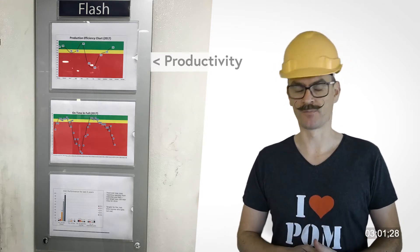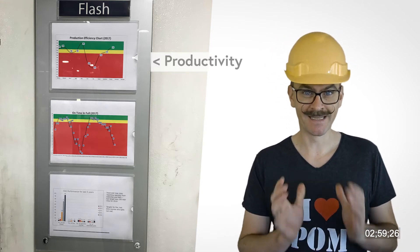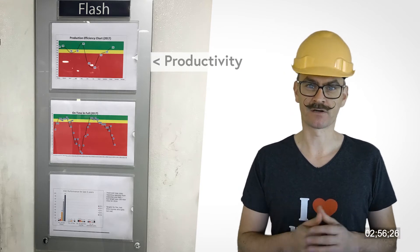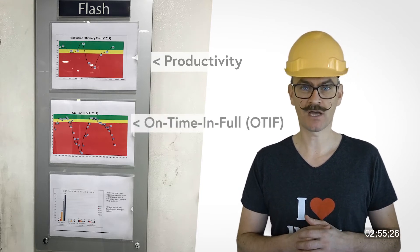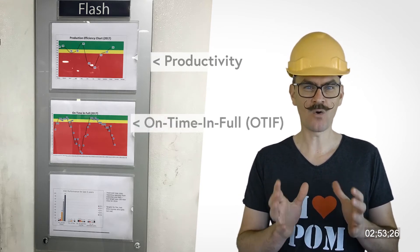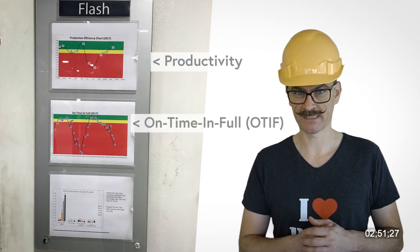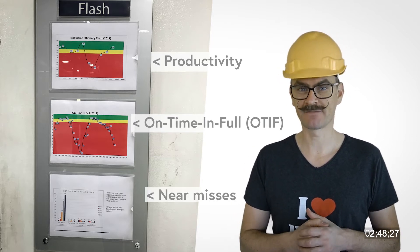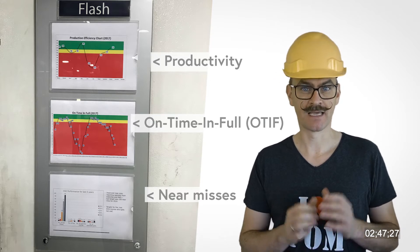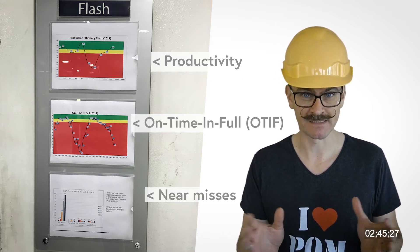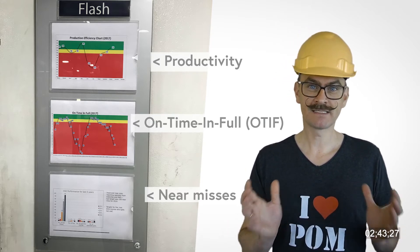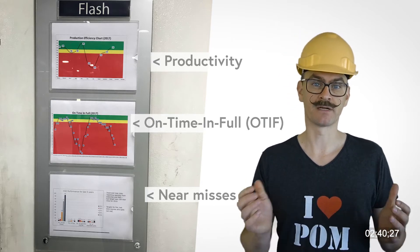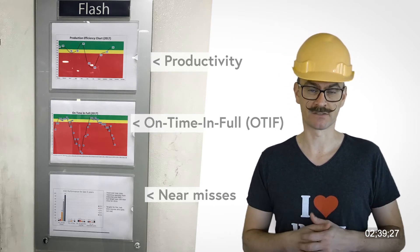The upper chart reports productivity measured in liters of paint per labor hour. The middle chart reports on on-time info, which indicates how many customer deliveries are complete and on time. The lower chart is a health and safety metric — it measures the number of near misses, that is, how many times something almost went wrong, which operators are asked to report.